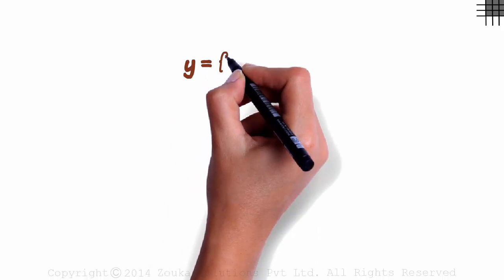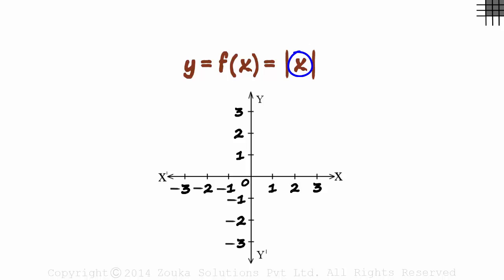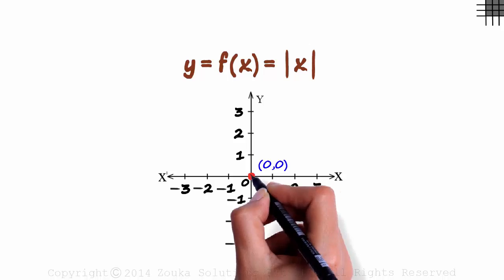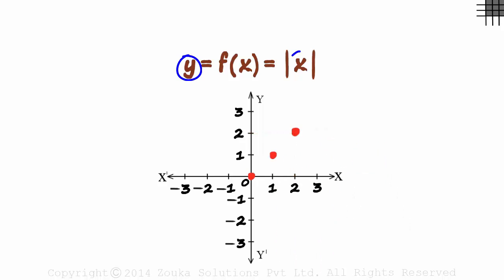The first function we will look at in this session is y, or f of x, equal to the absolute value of x. How do we plot this on the graph? When x is zero, y is also zero, so zero comma zero is one of the points. If x is one, then y is also one. The point is one comma one. Two comma two will be another point. When x is minus one, the absolute value of minus one is one — the absolute value just ignores the sign of the number.